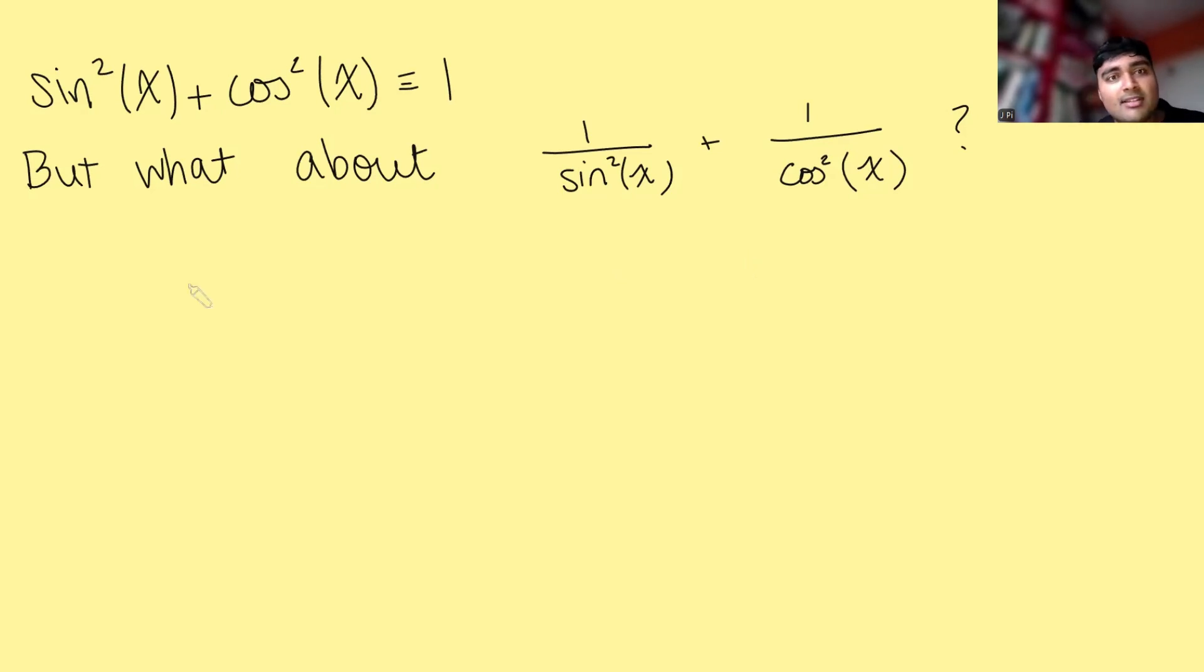The short answer is no, it can't be, because we know that sine of x is always going to be between minus 1 and 1. So if we square sine of x, we know that's going to be a positive number, but less than or equal to 1.